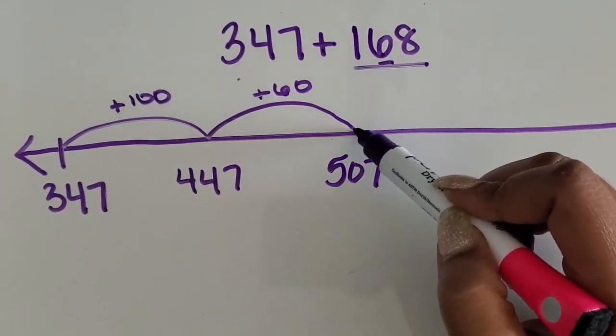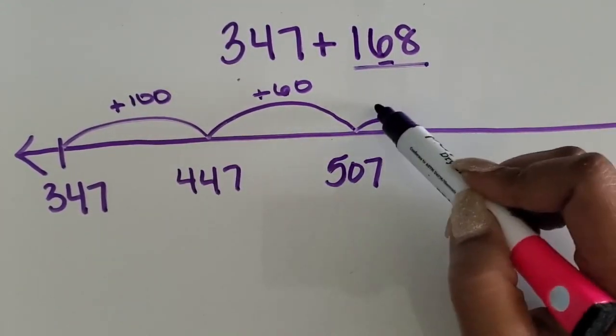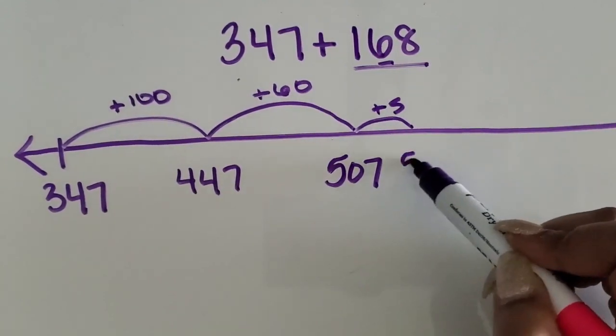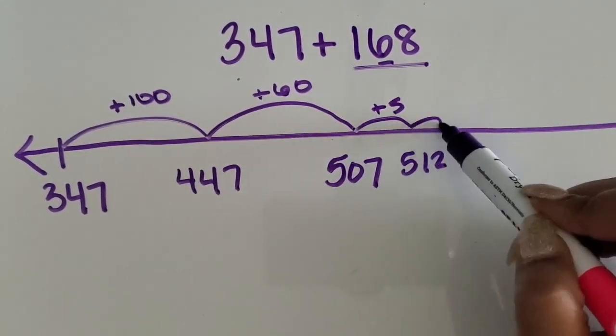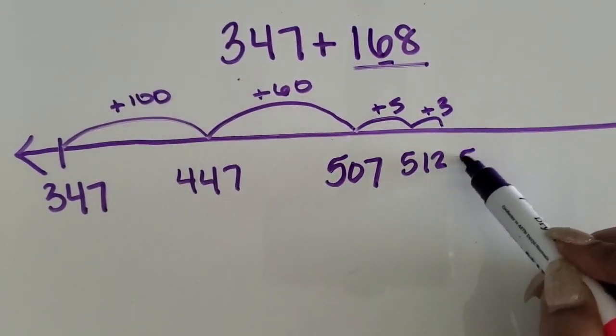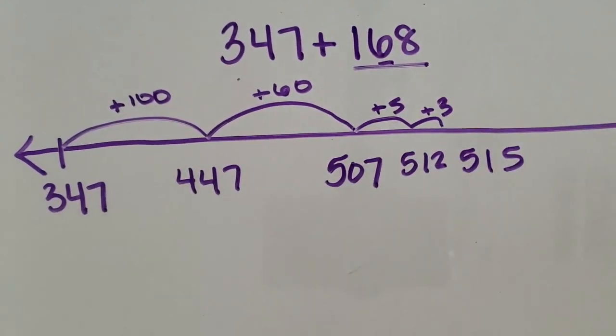Then add eight ones. This can be added by five, which is 512, and then three more, which would be 515. That's one way.